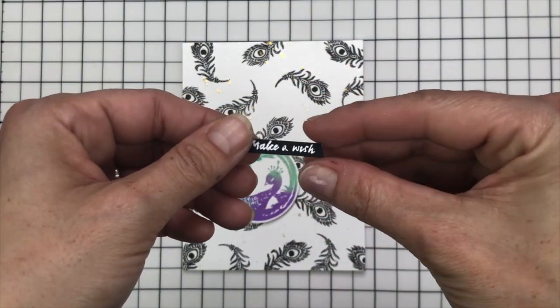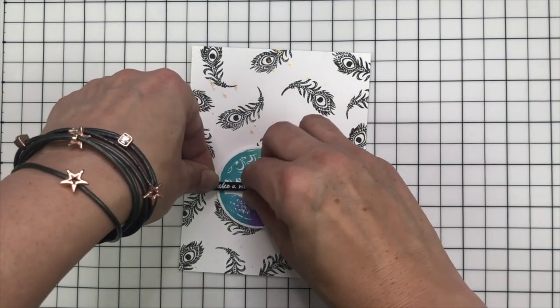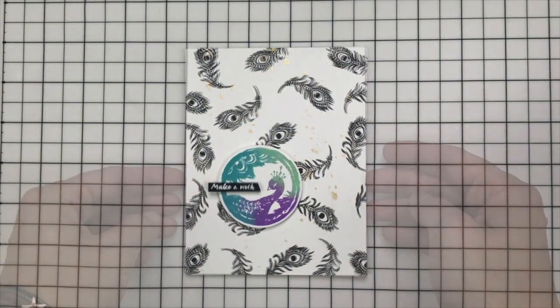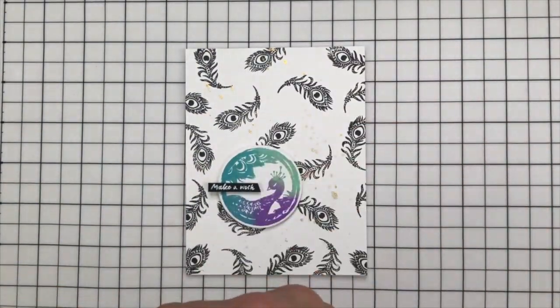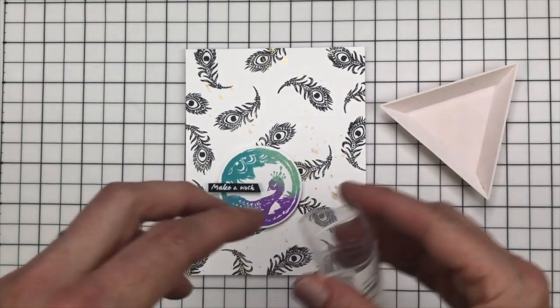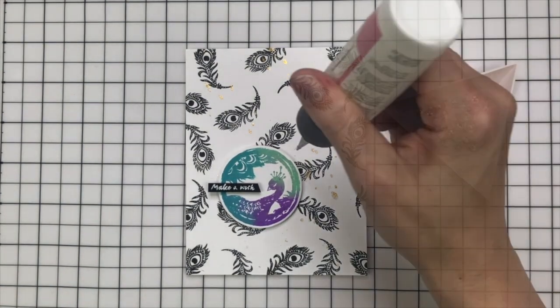And I'm popping up my first image on foam tape. The sentiment was heat embossed in WOW bright white opaque superfine embossing powder onto a strip of navy cardstock from the box. And then as a finishing touch, I'm going to come in with some of these Studio Cartier iridescent bubbles and add them on with liquid adhesive.